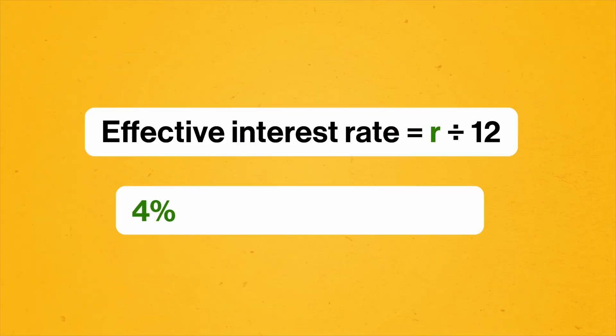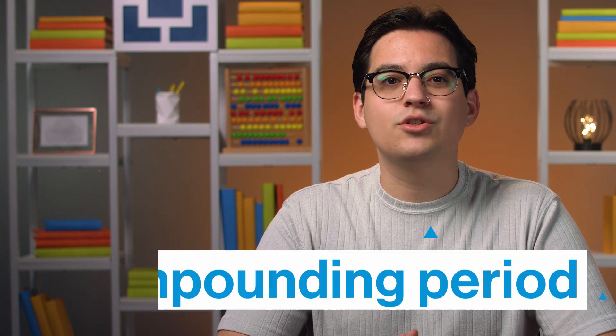Since Brema has a 4% annual interest rate applied monthly, the bank divides that 4% by the number of months in the year — 12 — to calculate the interest rate that gets applied each month. That comes to about 0.33%. Brema's interest gets applied every month, and more generally, the length of time between compound interest payments is called the compounding period. This length of time affects how much he'll have saved after 6 years.